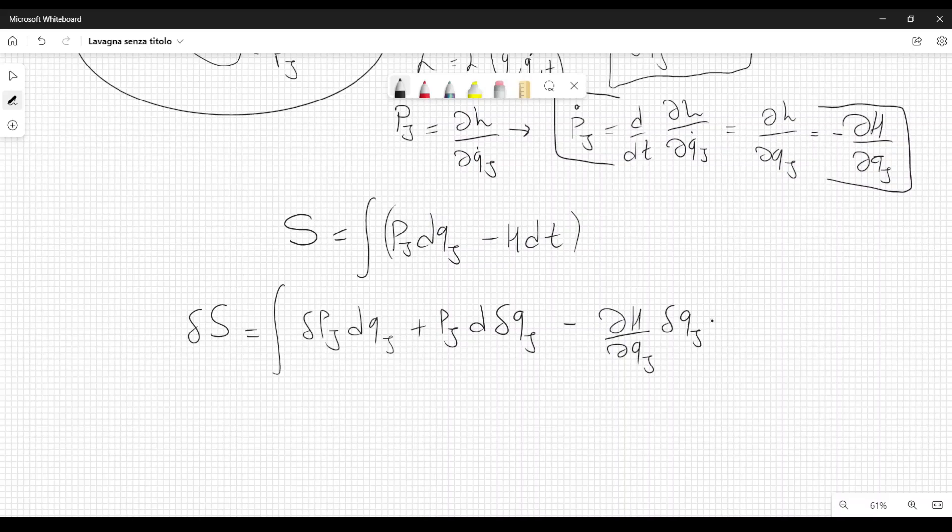the variation of q j dt minus, derivative of the Hamiltonian with respect to p j, delta p j dt, like this.